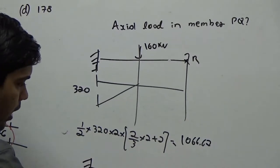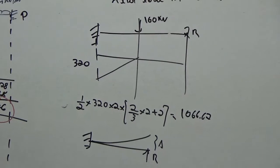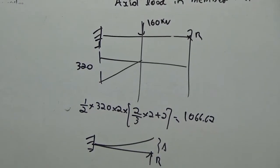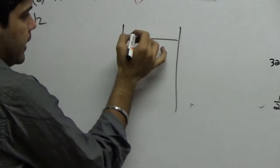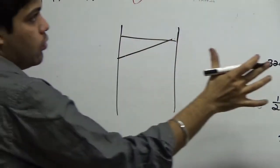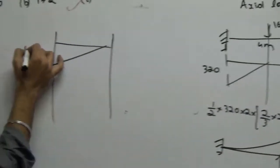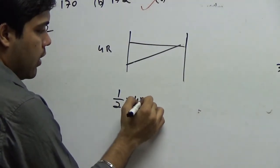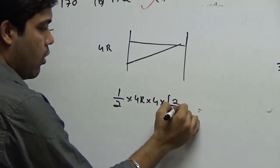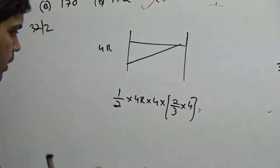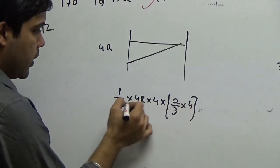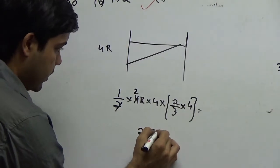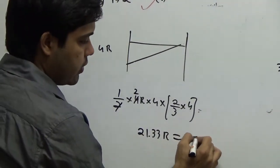I said that there is R load which causes a deflection. In this case, I will do it here. My moment area theorem will be applied - this is R. The total span is 4 meter. So I have 4R. The deflection value for me is 1 by 2 into 4R into 4, that is your area, into 2 by 3 of 4. This gives you 4 to the 8 - your 2 gets cancelled. 8 into 8 divided by 3, that gives you 21.33R. This has to be equal to 1066.67.